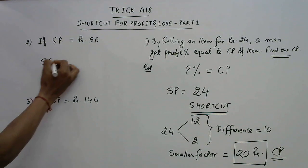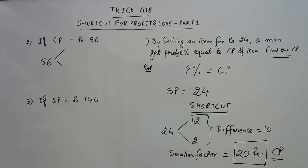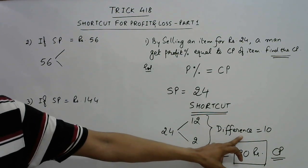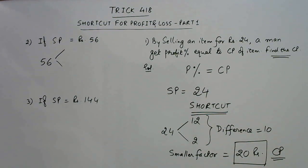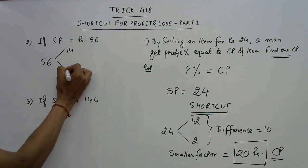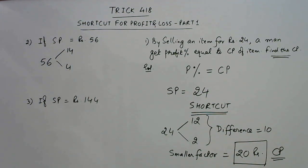So 56 is to be divided into two factors whose difference is 10. This is the shortcut, difference should be 10. So what are the factors? We have 14 and 4 because 14 into 4 is 56 and difference of 14 and 4 is 10.